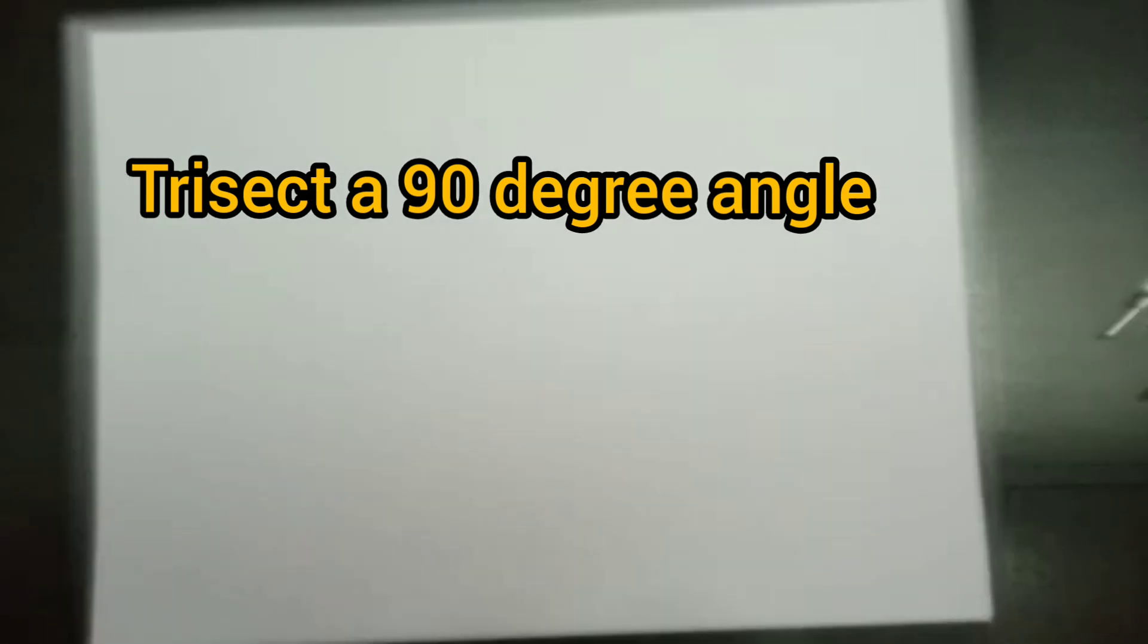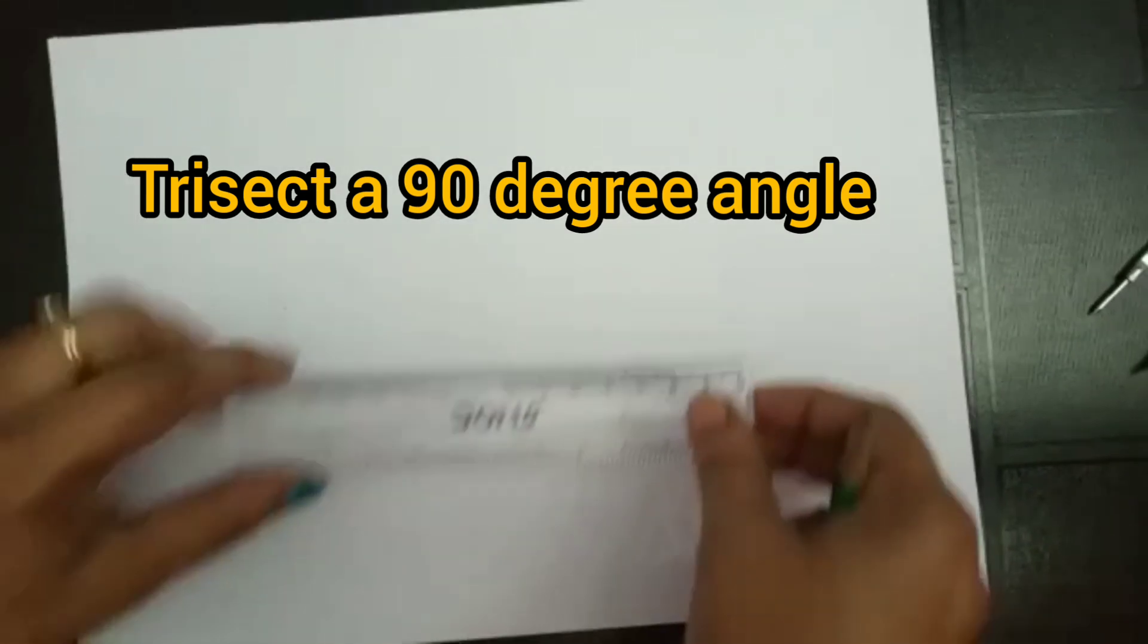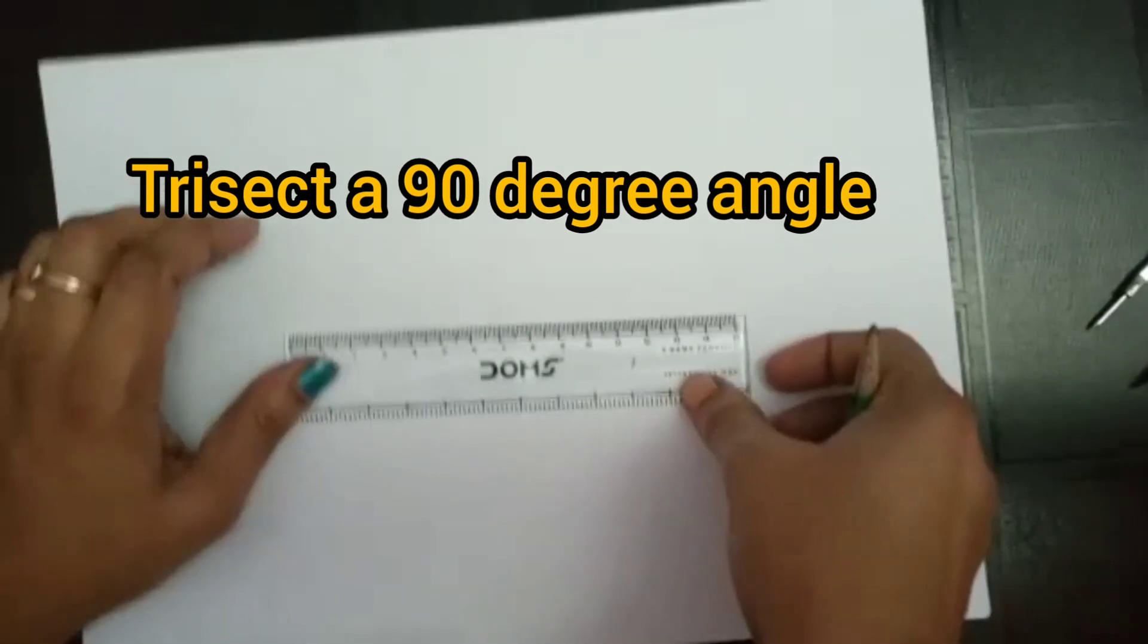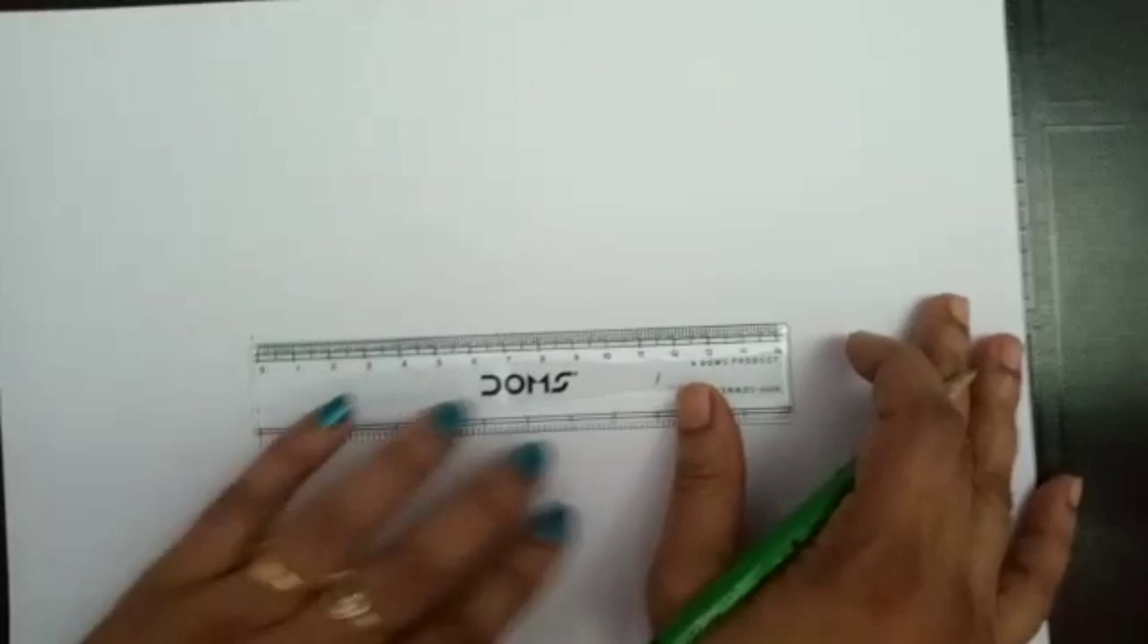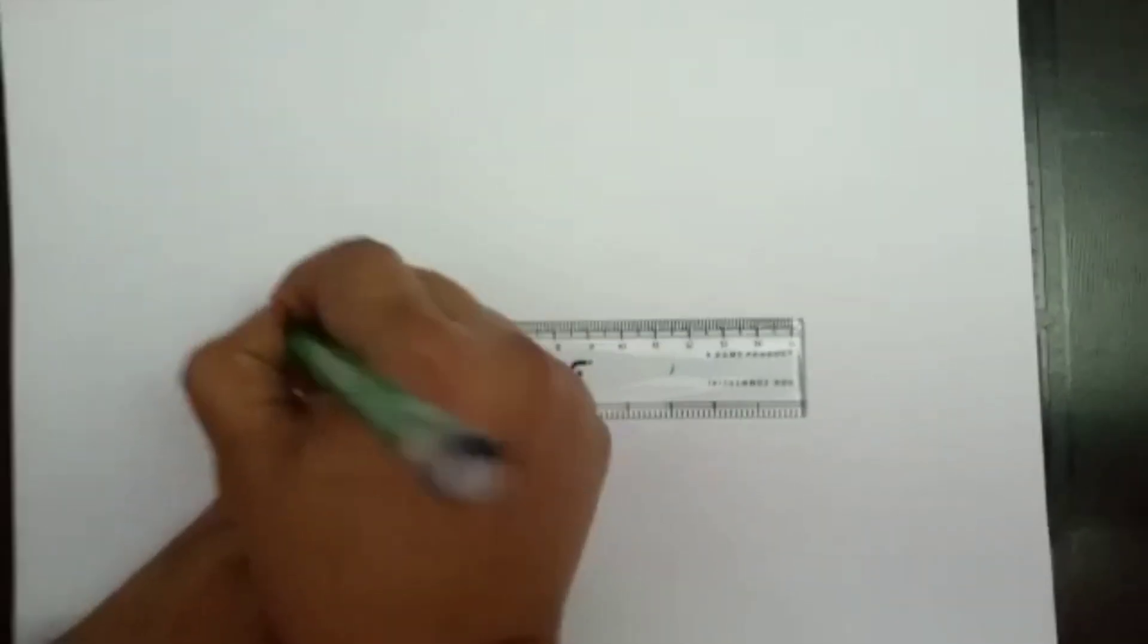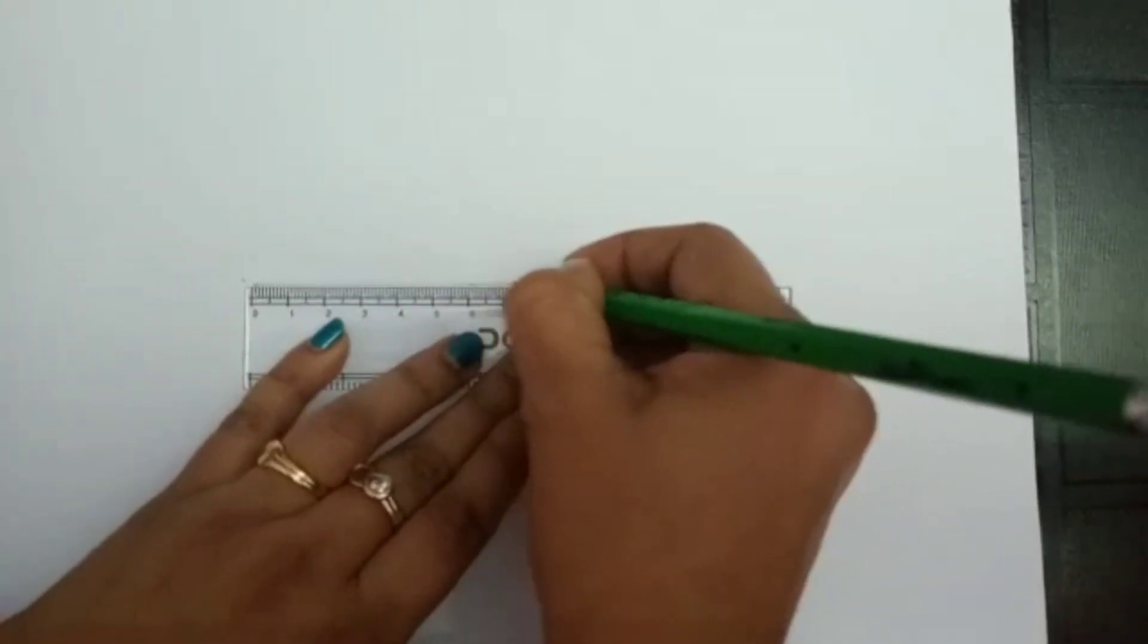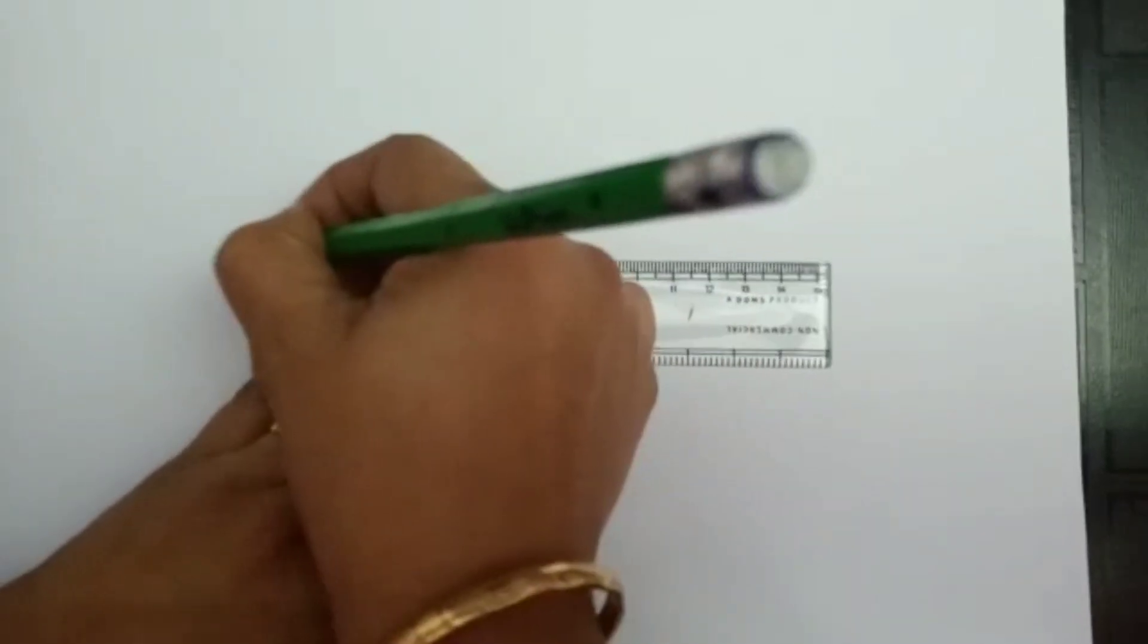Namaste children, today I will show you how to trisect a 90-degree angle. For that, first we have to draw a ray of seven or eight centimeters, whatever measurement you can take.